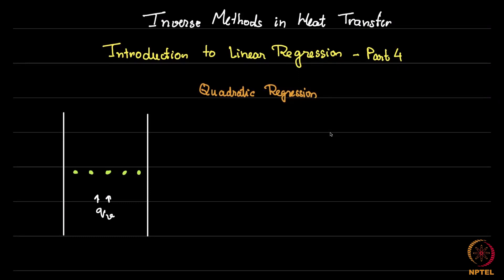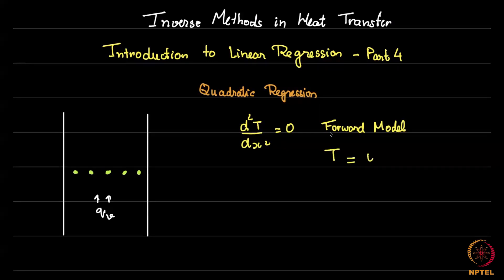Welcome back. In the last few videos we saw how to use linear models. Because we were dealing with steady-state heat conduction without heat addition, we had d²T/dx² = 0. Our forward model from physics said that the temperature would be of the form: a constant plus some other constant multiplied by x.